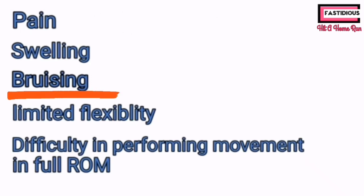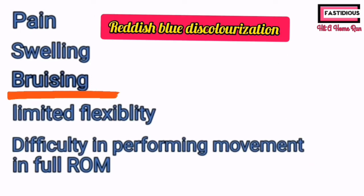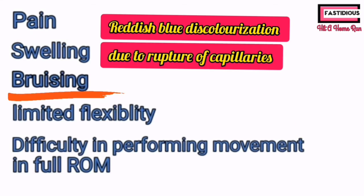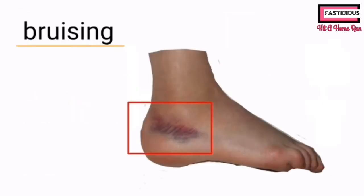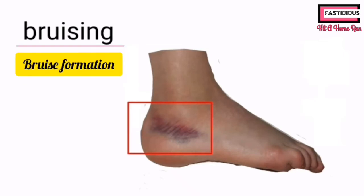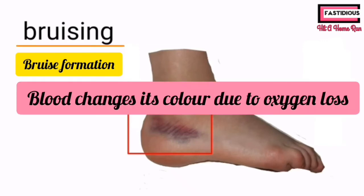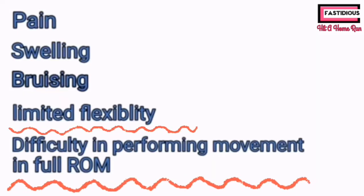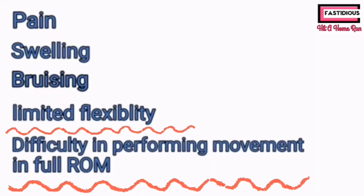Bruising is the reddish-blue discoloration of a particular area due to the rupture of small blood vessels called capillaries. In the case of sprain, when the ligament is injured, the capillaries supplying the ligament rupture. As a result, blood becomes trapped below the skin, resulting in a reddish-blue discolored patch called a bruise.